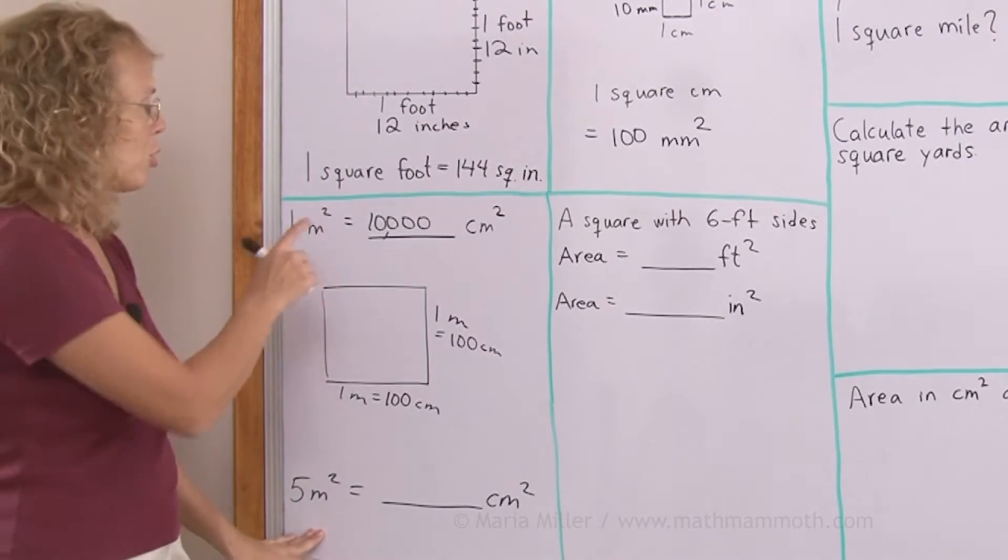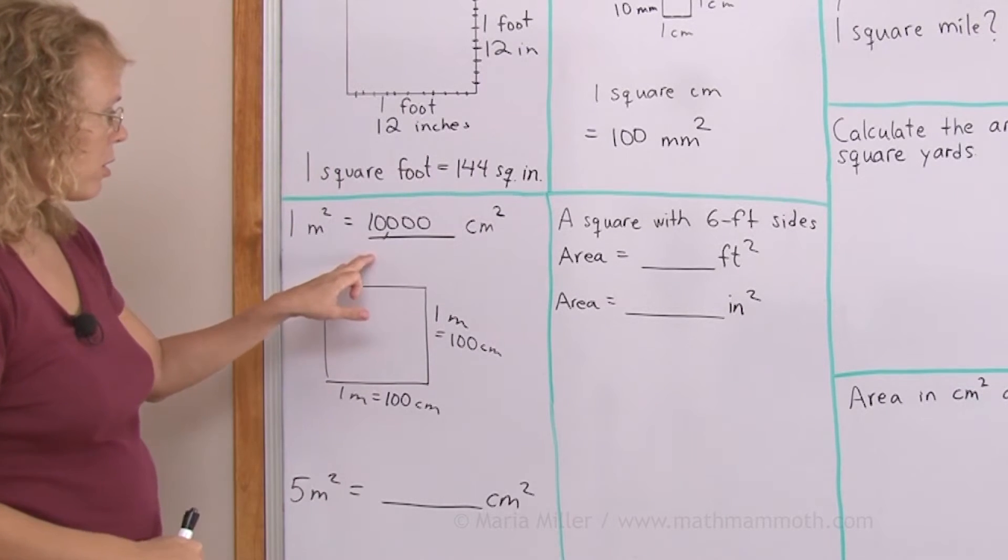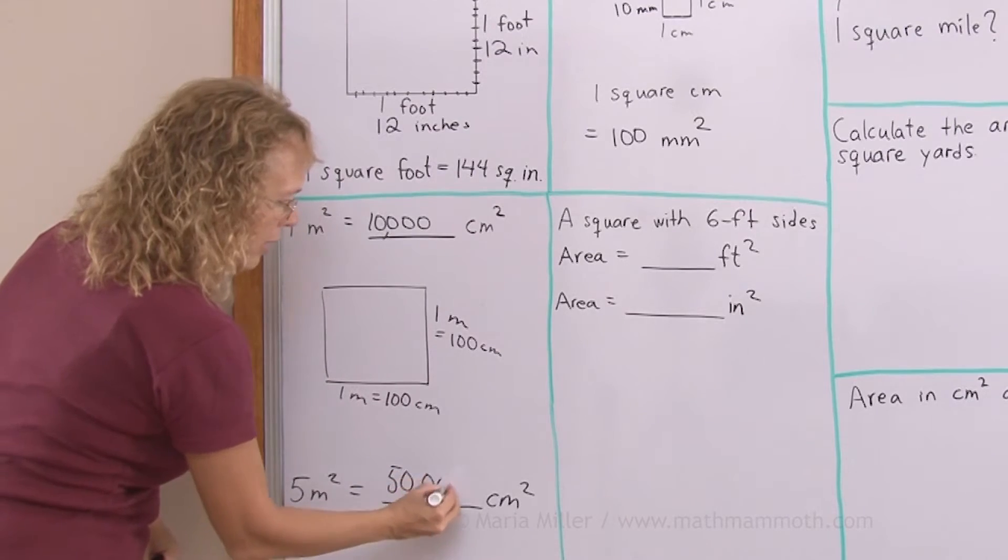Now this one here, I can use what I already calculated. Five square meters would be, of course, five times that, 50,000 square centimeters.